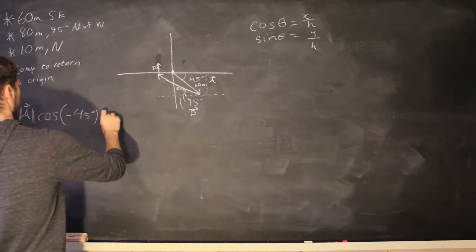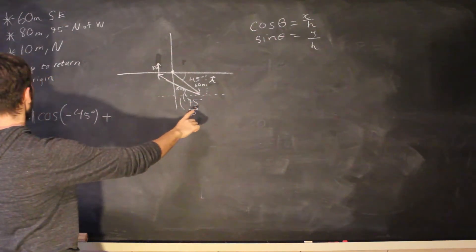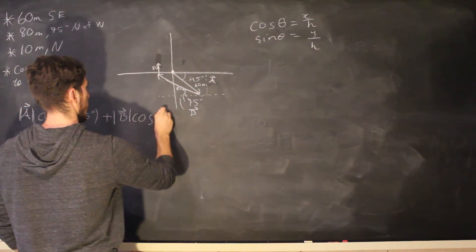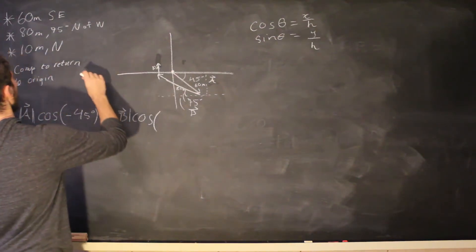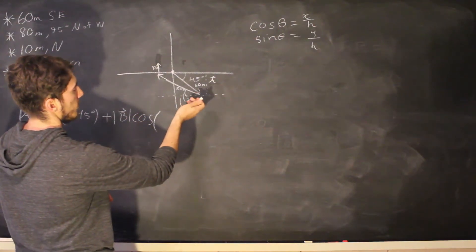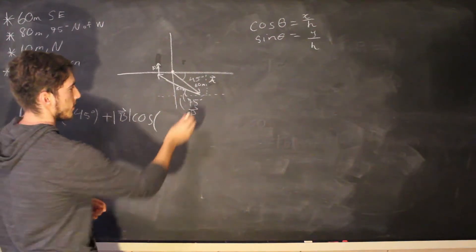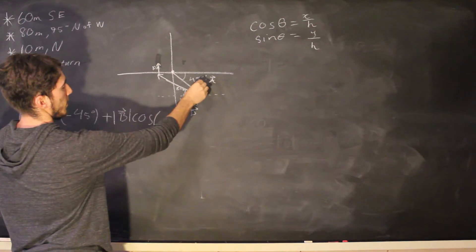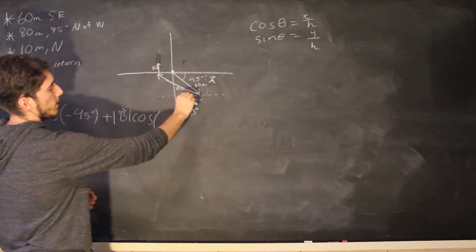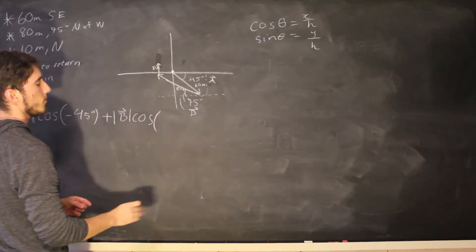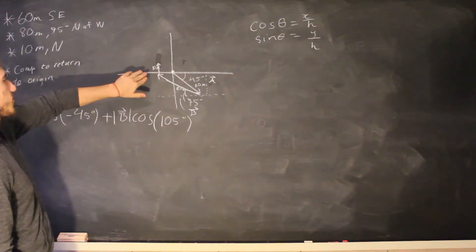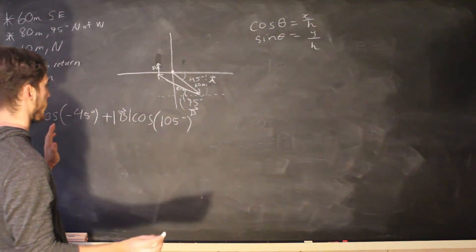So cosine of negative 45 degrees and then we're going to add the x component of b is going to be the magnitude of b cosine. So we're 75 degrees north of west. Making this actually 180 degrees minus 75 degrees because remember we start at zero here and then we're at 90 right here and then at this point it's 180 minus 75 degrees. So it's going to be 105 degrees. And then for the last vector there's only a y component so we don't have to worry about the x component.